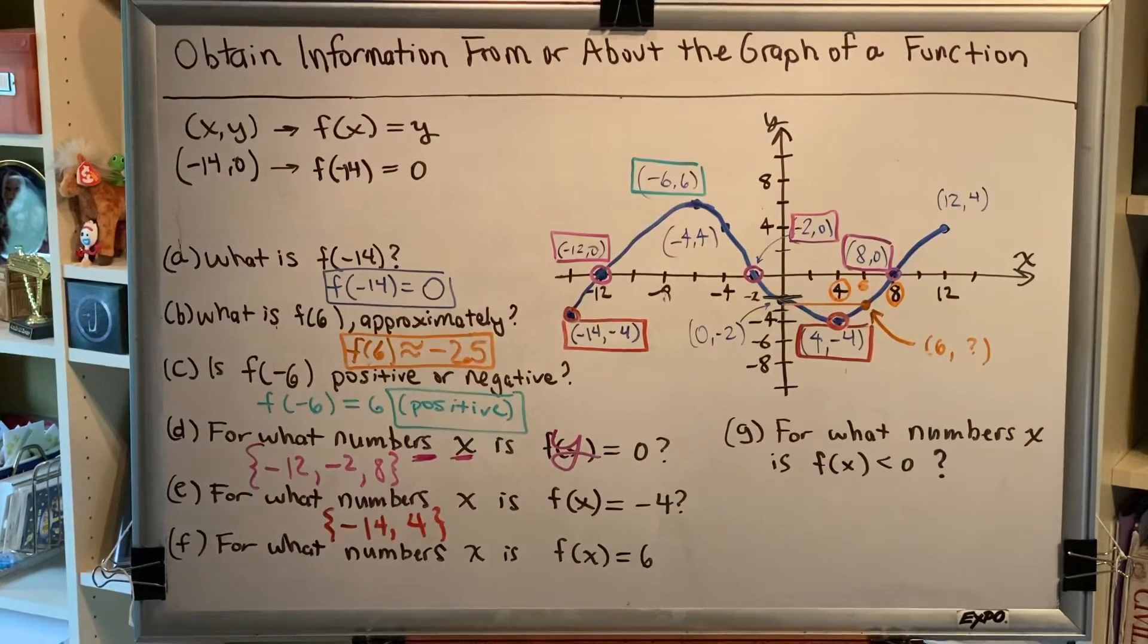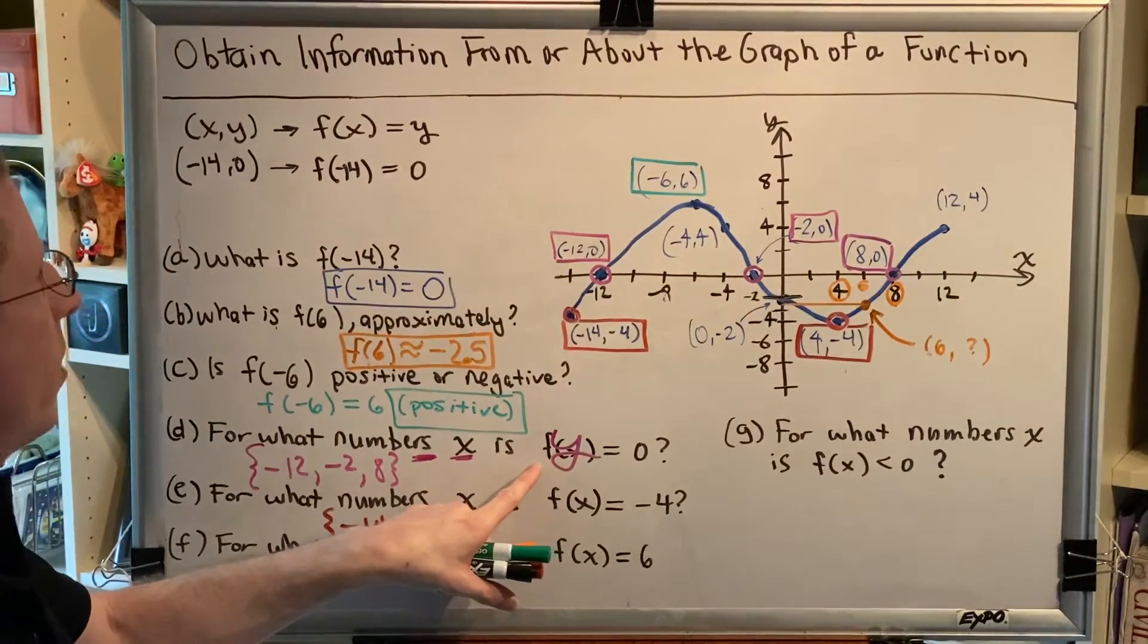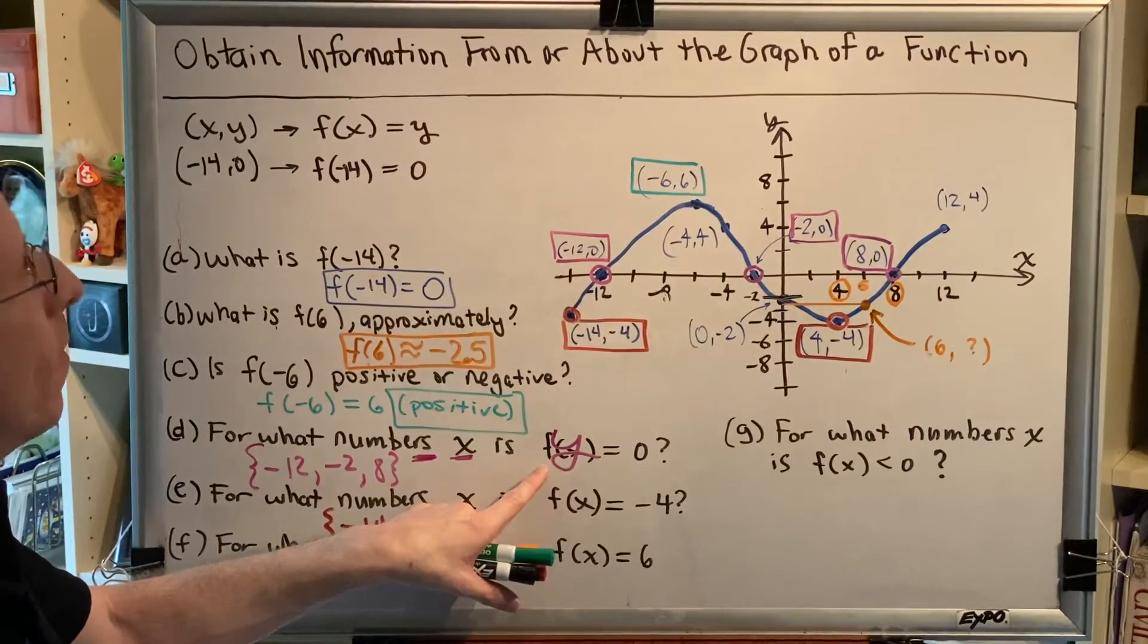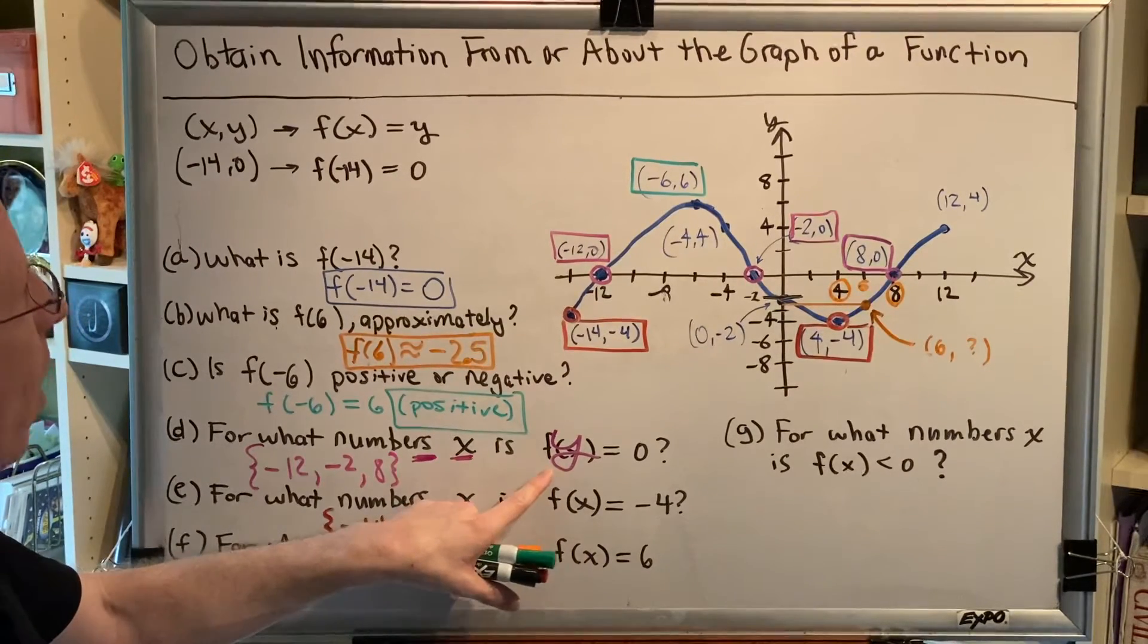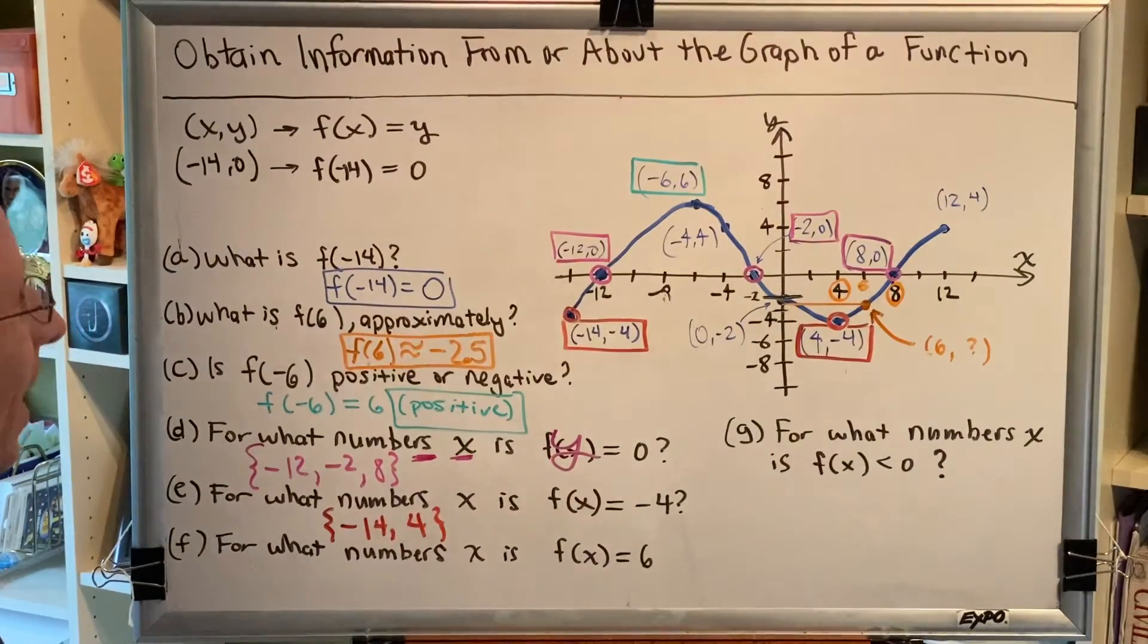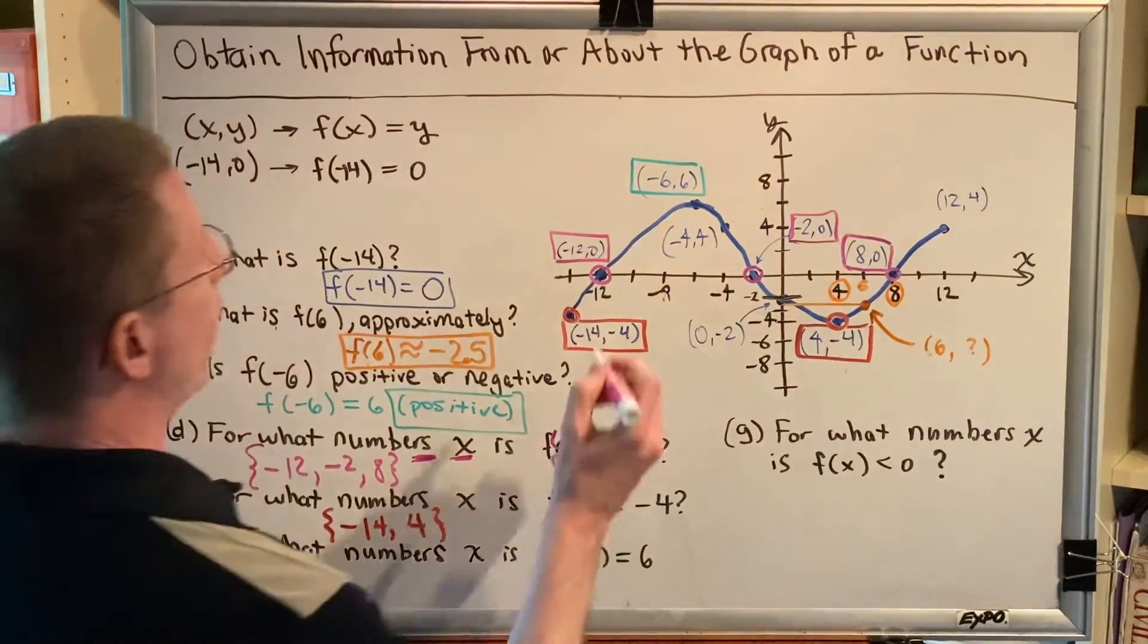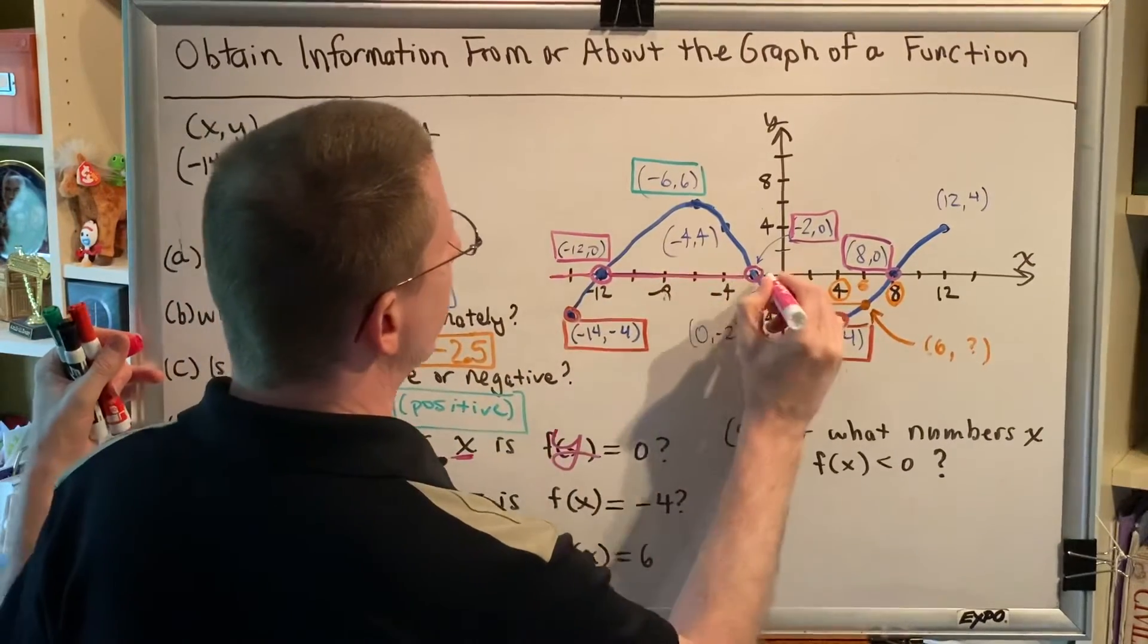Now before we move on to part F, there's something that I would like to point out about the previous two solutions. Let's talk about D for just a moment. So with D, we had the equation f(x) equals 0, and we know that f(x) is the same as y. So let's see if we can connect this to our previous math learning. What kind of line is y equals 0? Well, it's a horizontal line at a height of 0. In fact, if you draw the line y equals 0, you'll find that it's the x-axis.